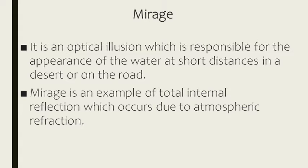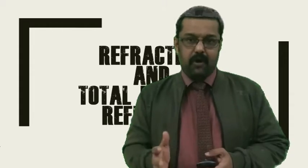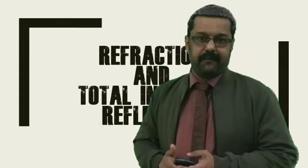Mirage — you might have heard of and seen a mirage. A mirage is caused due to total internal reflection of light by the various layers of air. It is an optical illusion which is responsible for the appearance of water at short distances in a desert or on a road. Mirage is an example of total internal reflection which occurs due to atmospheric refraction. So these two phenomena, refraction and total internal reflection, are connected to each other.